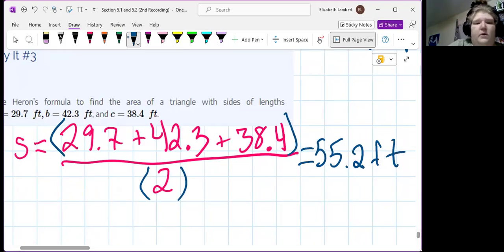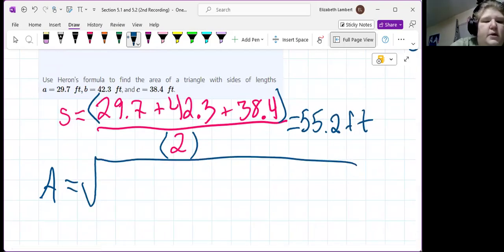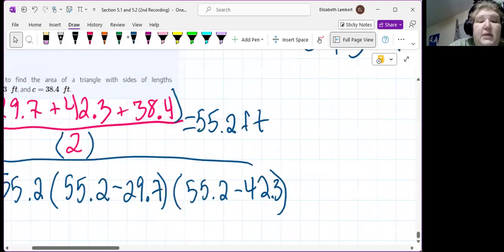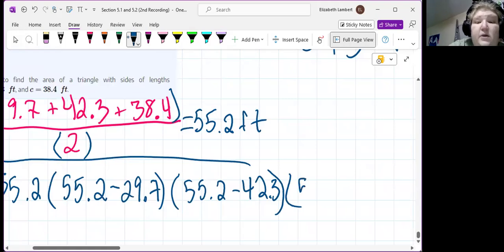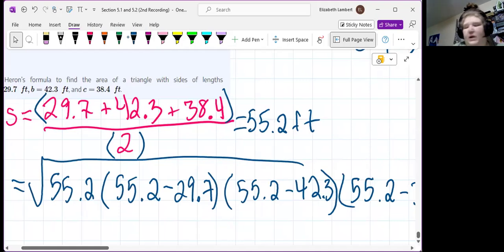Alright, so now, we're going to use our crazy Heron's formula. Big crazy square root. And that S, 55.2 times 55.2 minus 29.7, close, times 55.2 minus 42.3. It takes longer to write it than it does to type it in the calculator. Times 55.2 minus 38.4.